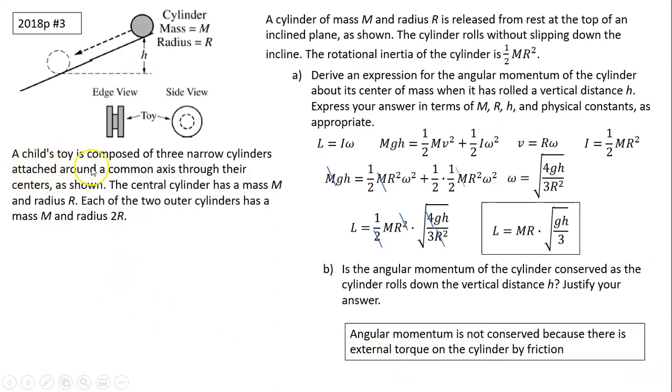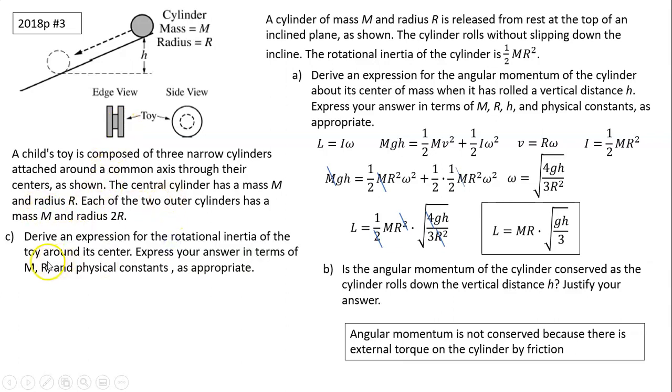Next part. A child's toy is composed of three narrow cylinders attached around a common axis through their centers, as shown. So here's three cylinders. The outer cylinder has a radius of 2R. Inner cylinder has a radius of R. And all the cylinders have the same mass, which is M. The question is, what is the total rotational inertia of the three cylinders added together?